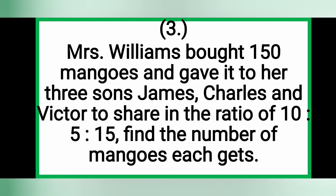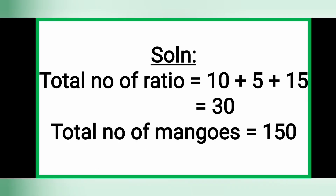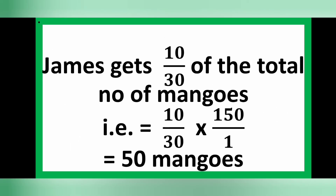Now let's move on to Example 3. Mrs. Williams bought 150 mangoes and gave them to her three sons — James, Charles, and Victor — to share in the ratio 10 to 5 to 15. Find the number of mangoes each gets. The total of the ratio parts is 10 plus 5 plus 15, which equals 30, and the total number of mangoes is 150. For James: he gets 10 over 30 of 150, which equals 50 mangoes.